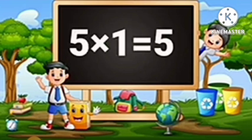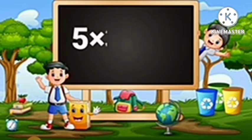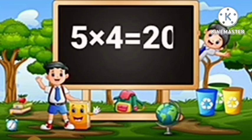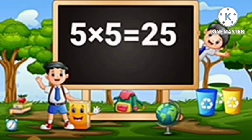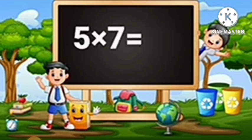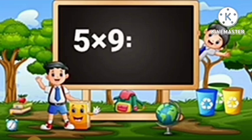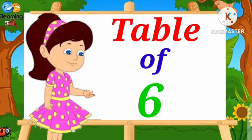Table of Five. Five-One's are Five. Five-Two's are Ten. Five-Three's are Fifteen. Five-Four's are Twenty. Five-Five's are Twenty-Five. Five-Six's are Thirty. Five-Seven's are Thirty-Five. Five-Eight's are Forty. Five-Nine's are Forty-Five. Five-Ten's are Fifty.